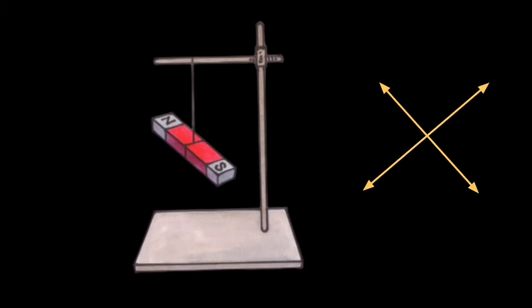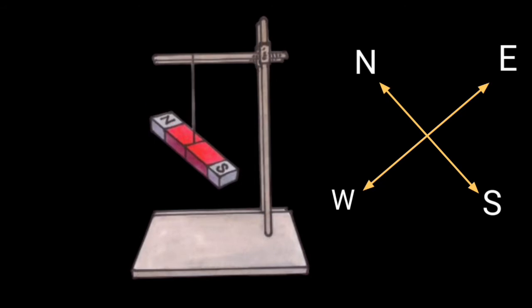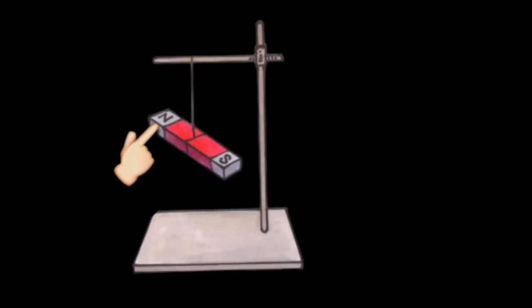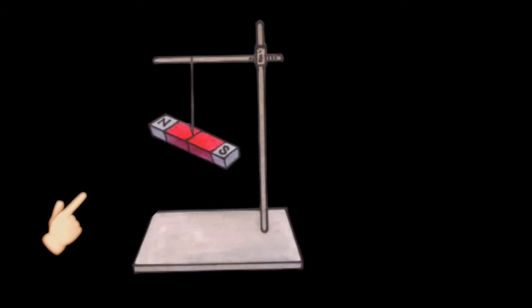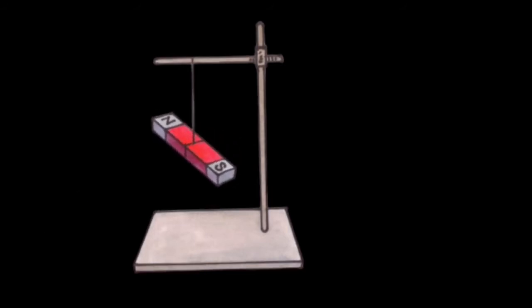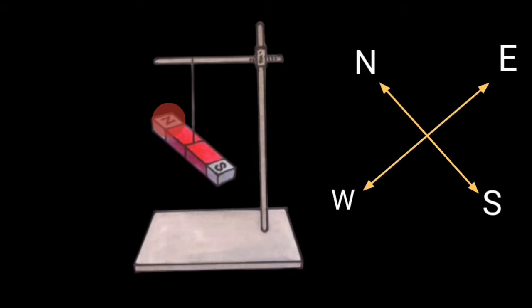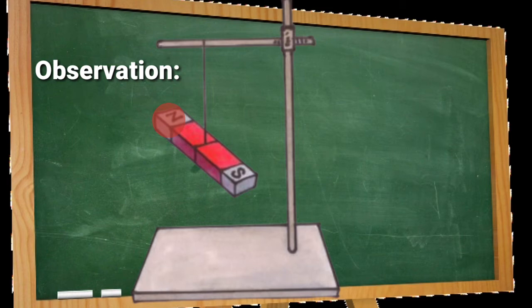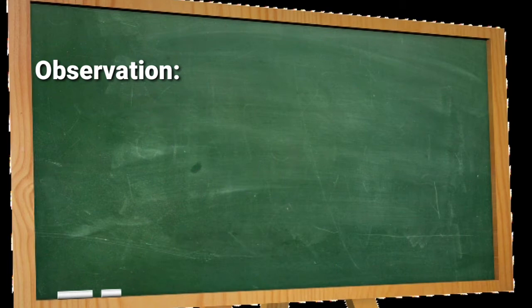Mark the end of the magnet pointing towards north with red color. Now once again disturb the magnet and observe it until it comes to rest. Does the red-marked end of the magnet take a position towards the north direction? Repeat the experiment several times at different places and observe whether the red-marked end always points towards north. What will you observe?